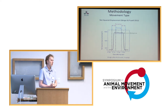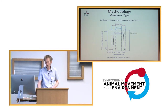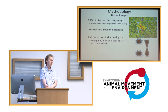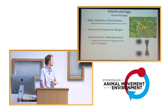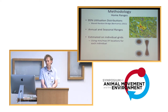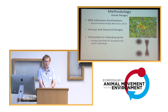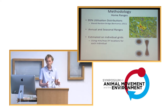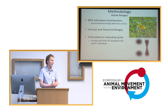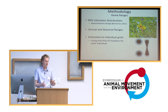Depending on the model parameters you use, you can either get the average for the population or get this for every individual. For the home range method, we use the 95% utilization distributions and the biased random bridge, which is a movement kernel that biases the kernel towards the next location. We calculated both annual and seasonal ranges, estimated on a grid for each individual using the min and max XY locations, because we use the utilization distribution to extract environmental variables — and we obviously want to do this at the same scale.